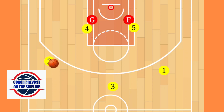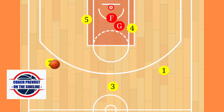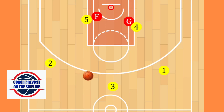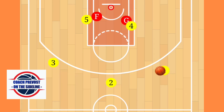Your power forward, your 4, will hold post for a three count. If he doesn't receive the pass, he'll cross screen for 5, bringing him to the ball-side post. Again, if there's nothing there, we're simply going to reverse to the opposite side and screen away again.